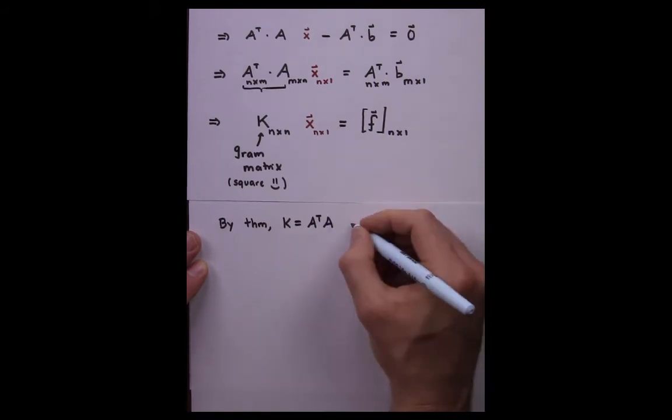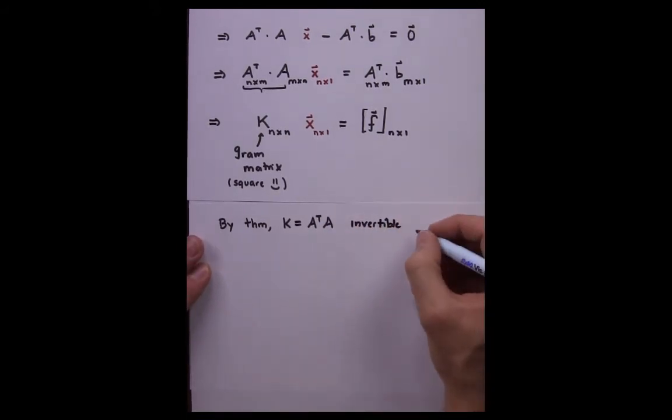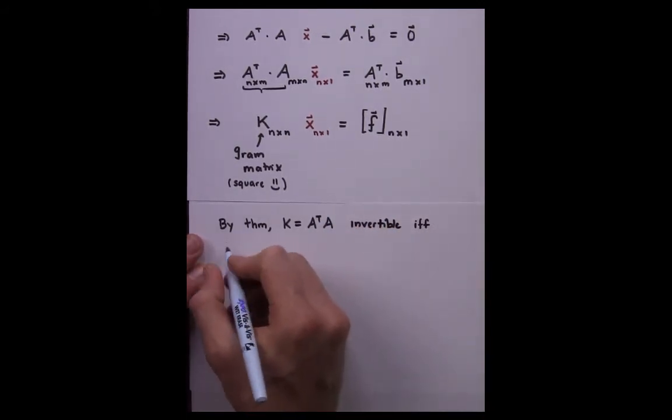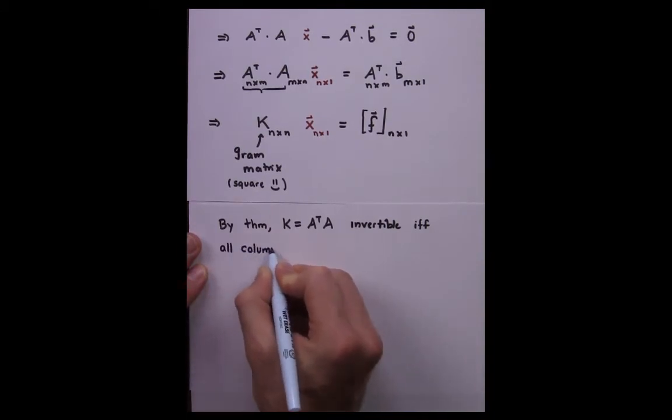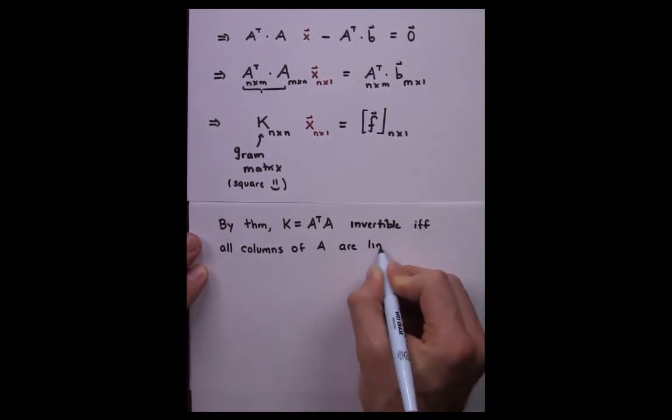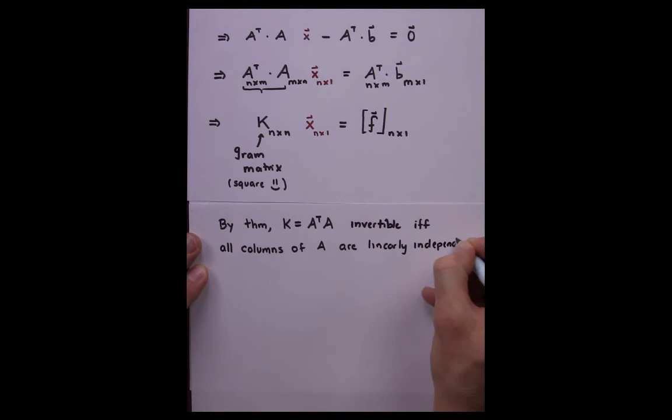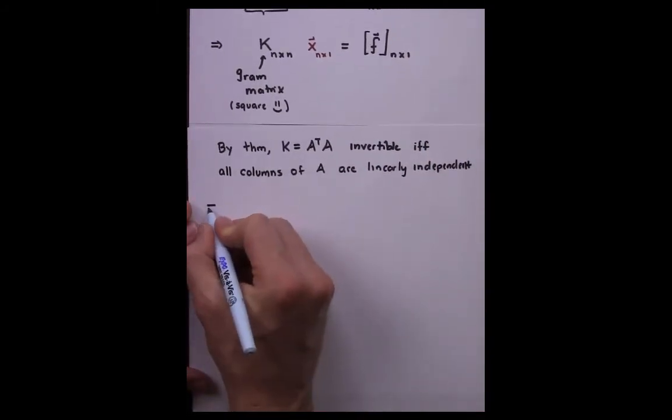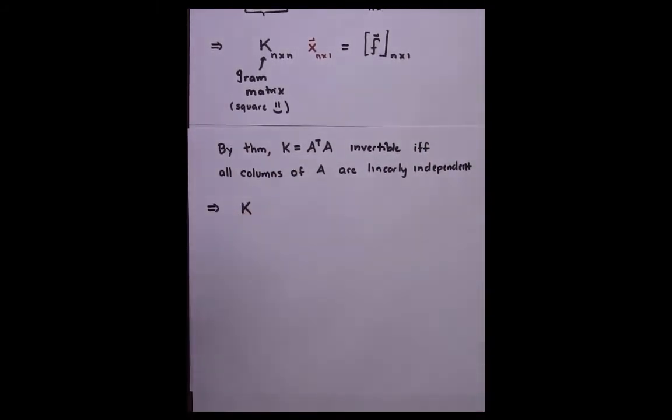By another theorem, the Gram matrix A transpose times A is invertible if and only if the columns of A are linearly independent. As we will see, for the data that we've collected, our corresponding Vandermonde matrix indeed has linearly independent columns,